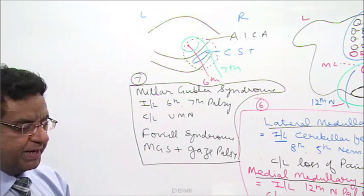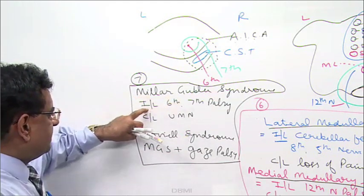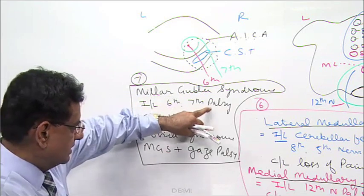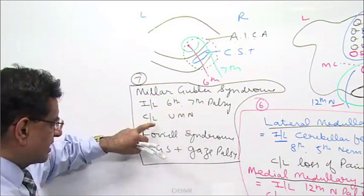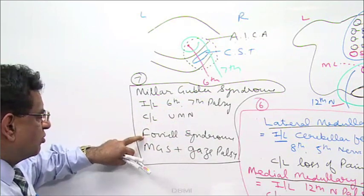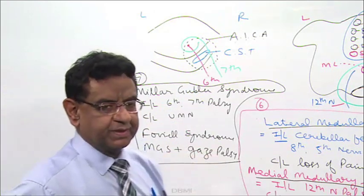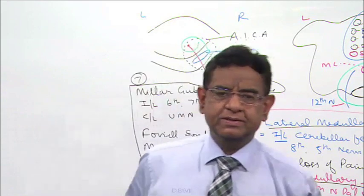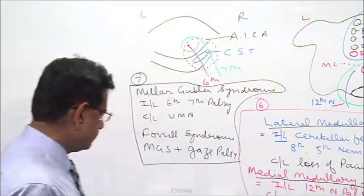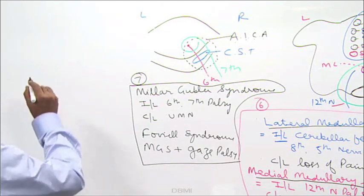Before moving to the midbrain, let's revise: in Miller-Gubler syndrome, ipsilateral sixth and seventh palsy with contralateral upper motor neuron features; Foville syndrome is Miller-Gubler syndrome plus gaze palsy. Now we move on to the midbrain. First, we learn the anatomy.